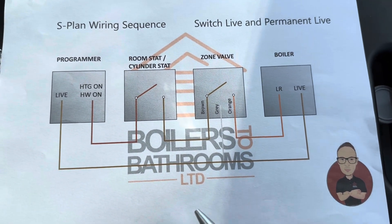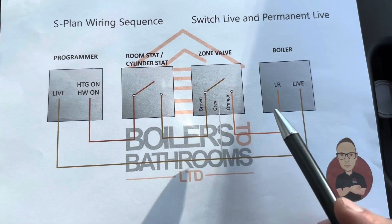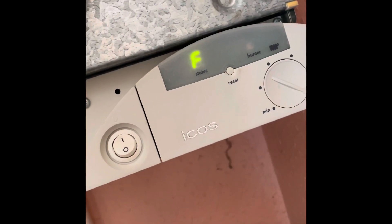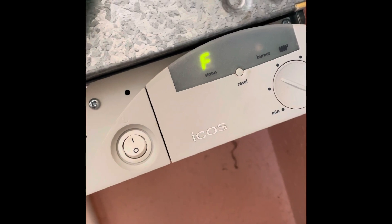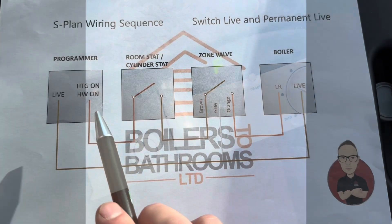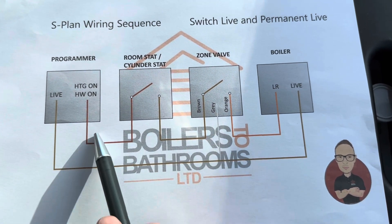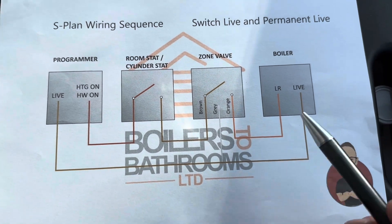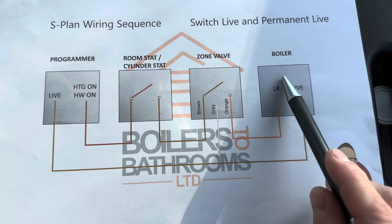Another no-heating fault: you get to the boiler and it's flashing, coming up with a fault code. In that case we know the wiring path is okay because we're getting 240V on the live return to fire the boiler in the first place. The boiler itself has a fault on it, so that's where we're looking for the problem.